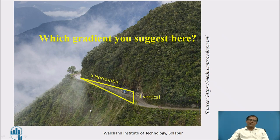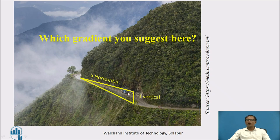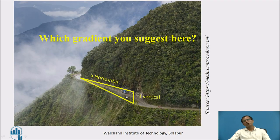Let us pause the video. I hope you are able to suggest which gradient to use for hilly locations — out of ruling gradient, limiting gradient, and exceptional gradient. The correct answer is: if we provide the ruling gradient, which is a flatter one, more cutting of the hill section is required. More cutting creates a problem with the stability of the hill. So the ruling gradient will not suit here. The limiting gradient — say 5% or 1 in 20 — is what we suggest, as it results in lesser cutting on those sections.